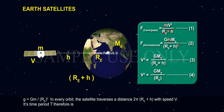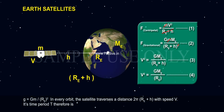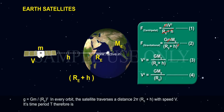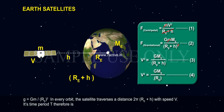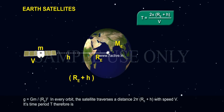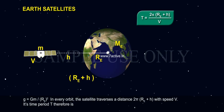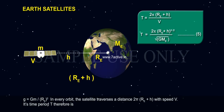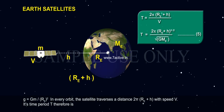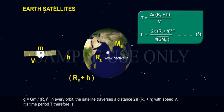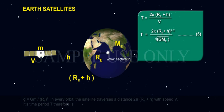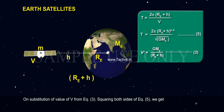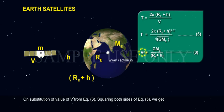In every orbit, the satellite traverses a distance 2π(RE + H) with speed V. Its time period T therefore is T equals 2π(RE + H) divided by V, which equals 2π(RE + H)^(3/2) divided by the square root of GME, Equation 5, on substitution of the value of V from equation 3.